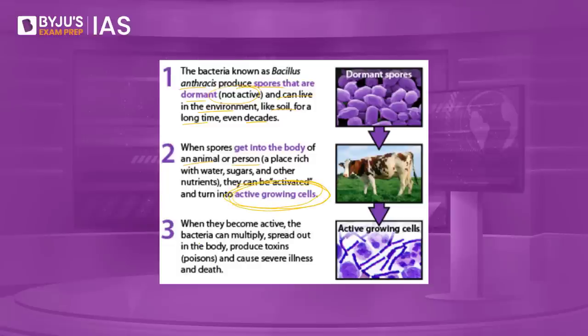When the spores become active, the bacteria start multiplying. They spread out in the body, produce toxins which are essentially poisons, and can cause severe illness as well as death. These animals can include cattle, sheep, goats, horses, and as we see in Kerala, wild boar as well. Anthrax primarily affects herbivorous animals, but in omnivorous and carnivorous animals it can spread through contaminated meat, bone meal, or other feeds. Wild animals can also get the disease by feeding on anthrax-infected carcasses.